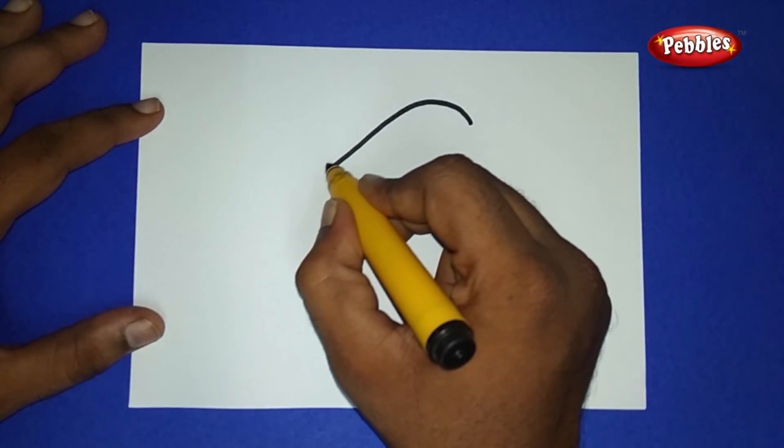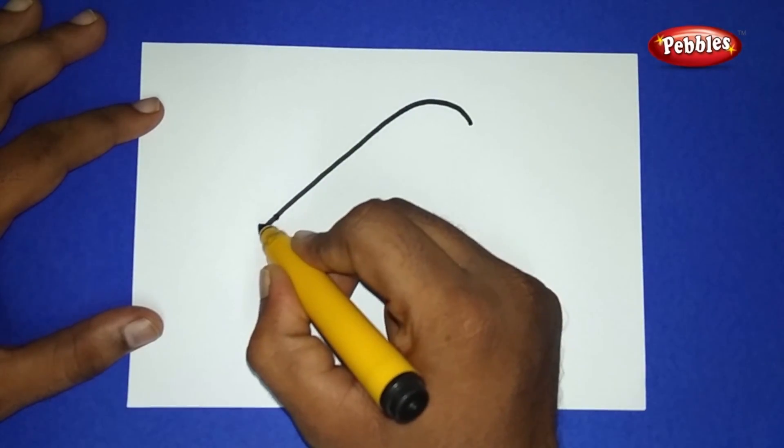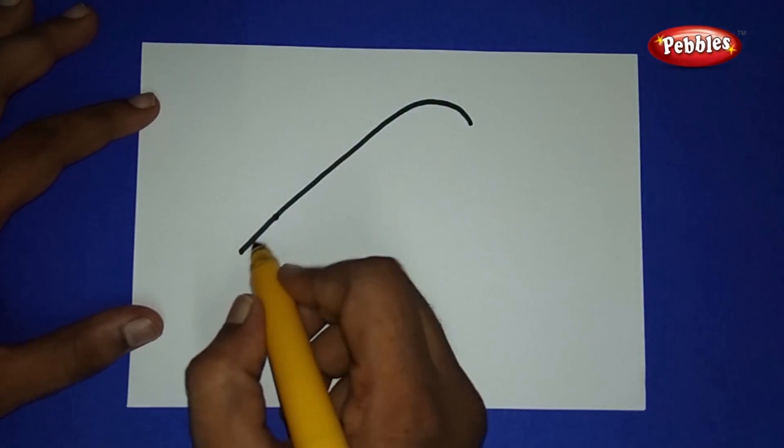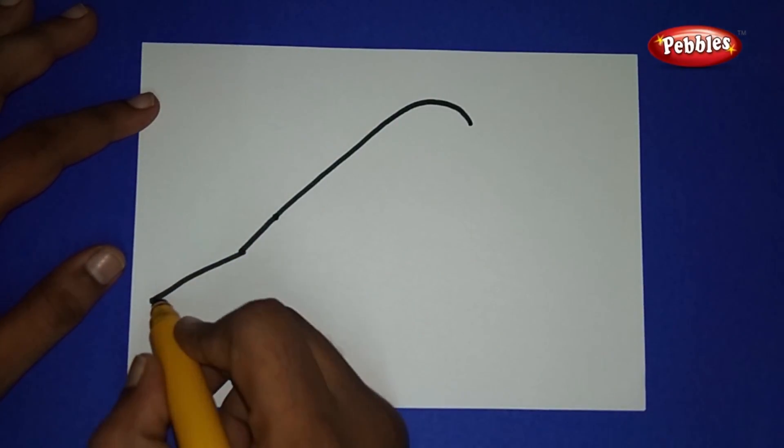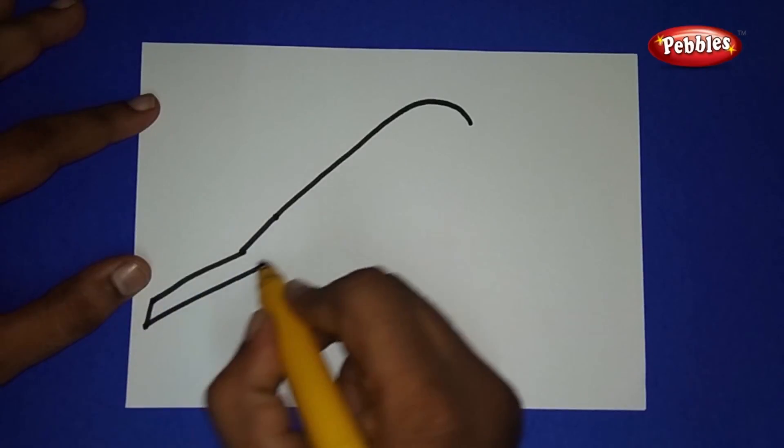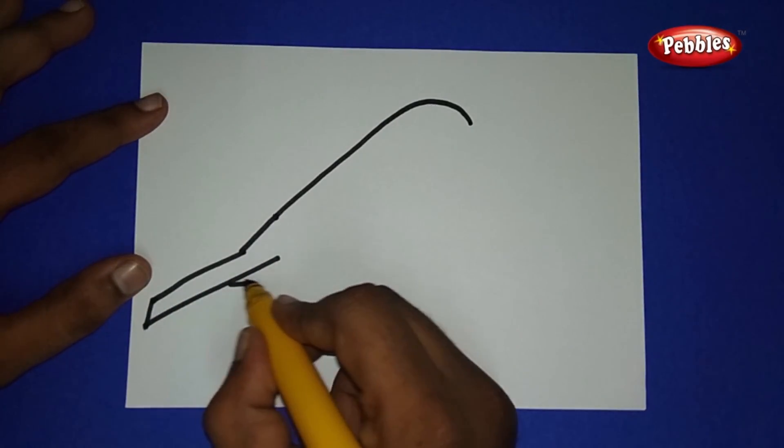Starting from the head part, coming to the body, draw an arch, a small arch, and a straight line downside. Again, have a curve there, again a straight line, and that comes inside using a straight line.